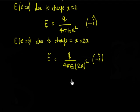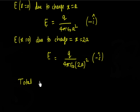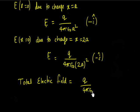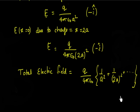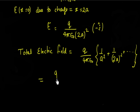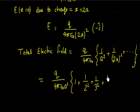I can add all these electric fields. So the total electric field will be — taking q over 4πε₀ common — we have 1 over a squared, plus 1 over (2a) squared, plus 1 over (3a) squared, plus 1 over (4a) squared, and this goes up to infinity, because the charges are spread over up to infinity.